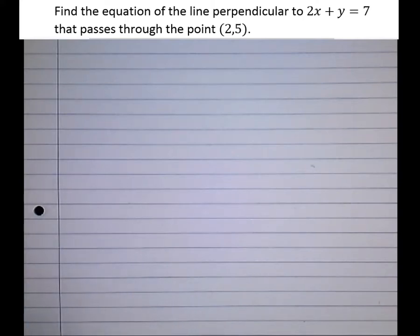In this tutorial we're going to have a look at perpendicular lines, and in particular find the equation of a line that runs perpendicular to another given the gradient and a point. So let's have a look at the question. Find the equation of the line perpendicular to 2x plus y equals 7 that passes through the point 2, 5.